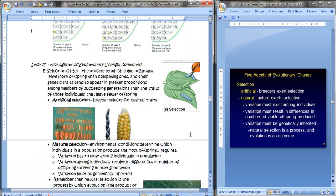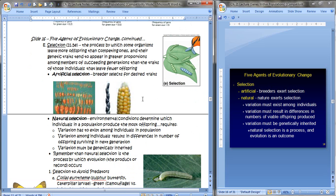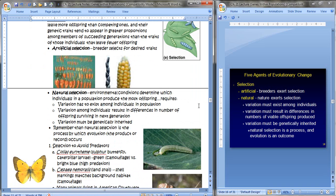And our last agent of change is selection. Now what we're talking about here is natural selection. This causes a big change in allele frequency. This is the process by which some organisms leave more offspring than competing ones. And their genetic traits appear in greater proportions among members of succeeding generations than the traits of those individuals that leave fewer offspring. So there are two types of natural selection or selection. There's artificial selection and natural selection.